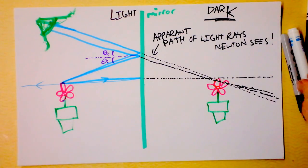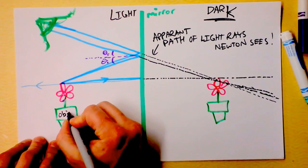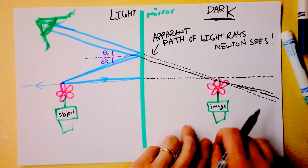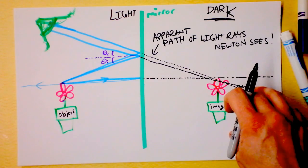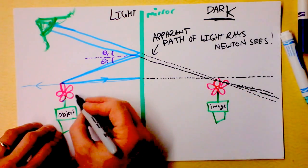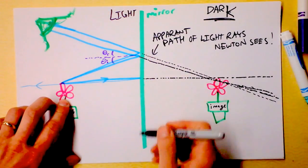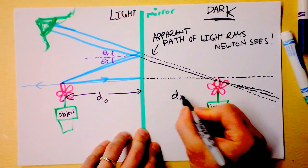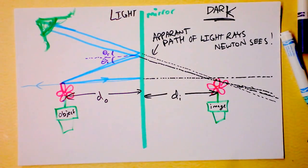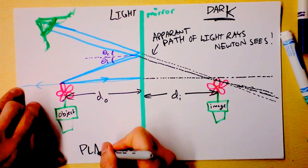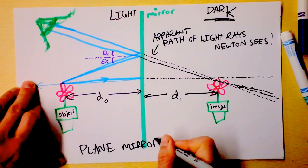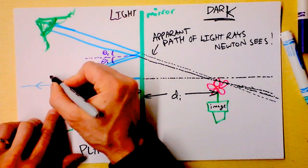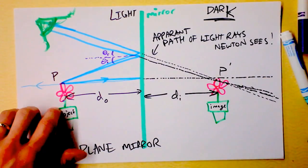So let's define some terms. The actual flower is the object, and the apparent flower behind the mirror is the image. The image is not real — there's nothing there, just darkness on that side. The distance from the object to the mirror surface is the object distance, and the distance from the mirror to the image is the image distance. For a plane mirror, these are exactly the same. We call the object point P and the corresponding image point P prime.